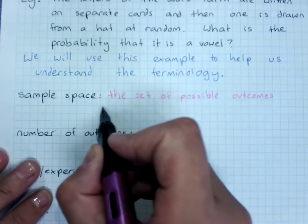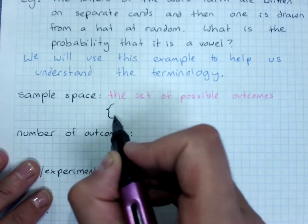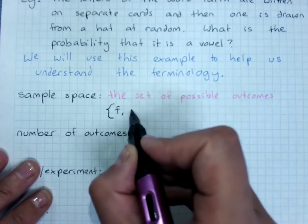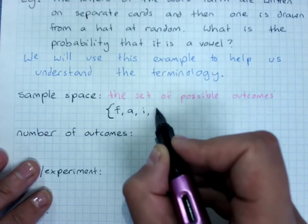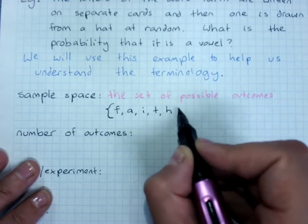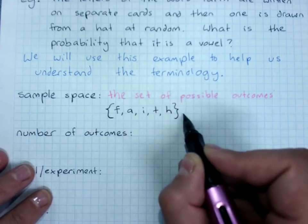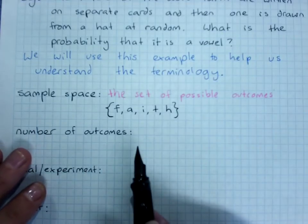So the sample space is the set of possible outcomes. We put the sample space in curly brackets and we write all the things we could get separated with commas. So that's the sample space - all the different outcomes.